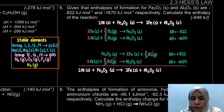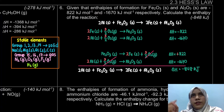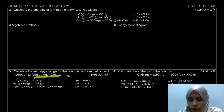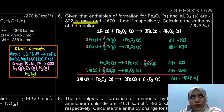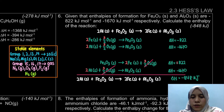The result is in kilojoules — not kilojoules per mole — because the question asks for the enthalpy of a specific reaction, not a standard enthalpy of formation. Even if the given data is in kJ/mol, you must check whether the question asks for a standard enthalpy (give kJ/mol) or a reaction enthalpy (give kJ only).